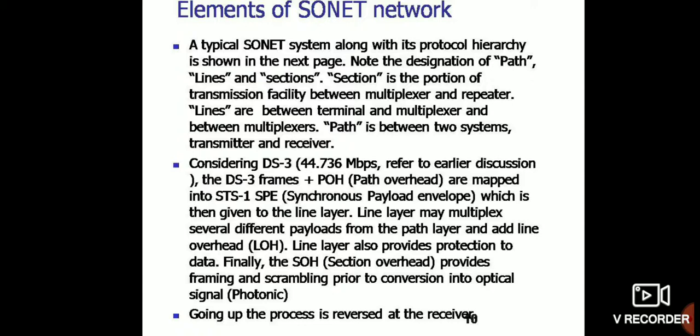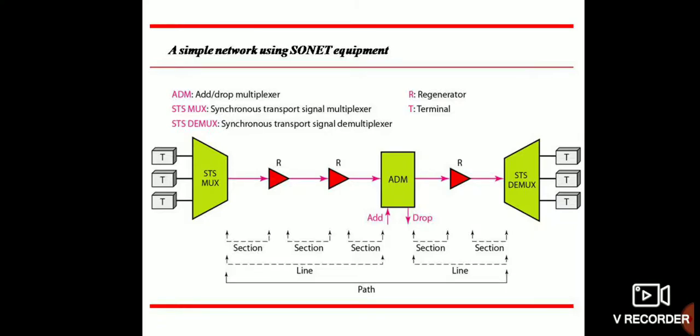Considering DS-3 at 44.736 Mbps, referred to earlier directions, the DS-3 frame plus POH path overhead are made into STS-1 synchronous line. Single payloads which is then given to the line layer. Line layer multiplies several different payloads from the path layer and adds line overhead. Line layer also provides protection to data. Finally, the section overhead for framing and scrambling prior to conversion into optical signal photonic.